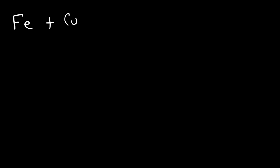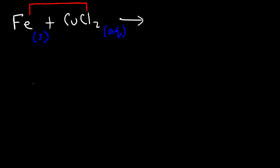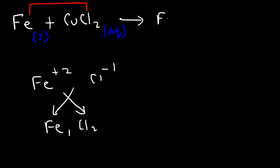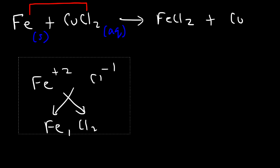In single replacement reactions, if we react iron metal with an aqueous solution of copper chloride, the metal Fe replaces the other metal copper. Fe has a +2 charge and chloride has a -1 charge, so the product is FeCl₂. Copper is displaced out of the solution as copper metal. Those are the products of this single replacement reaction.